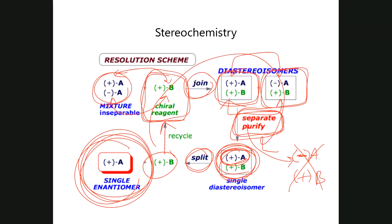The joining can be non-covalent — it can be an ionic association or other types of non-covalent associations. It's not uncommon to form what we call diastereomeric salts, which are ionic compounds. Those are separated and then you isolate your compound from the reagent. The second alternative would be a covalent bond — something that can be put on, the compounds separated, and then you chop it off and recover your compound.